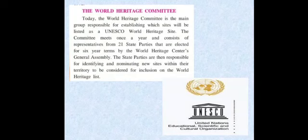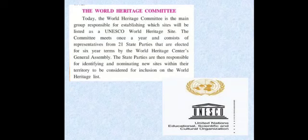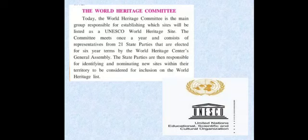Now, the World Heritage Committee. Today, the World Heritage Committee is the main group responsible for establishing which sites will be listed as UNESCO World Heritage Sites. The committee meets once a year and consists of representatives from 21 state parties, elected for a 6-year term by the World Heritage Centre's General Assembly. Only sites meeting specific terms and conditions can be included in the World Heritage list.